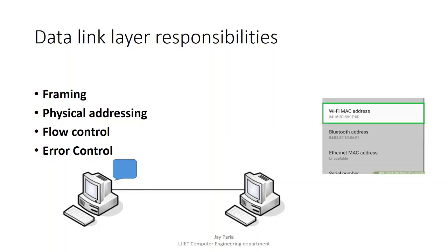Error control addresses the possibility that data received by the receiver may contain errors. If the link is broken or data is not received properly, there are many cases that can happen, and we need to know how to overcome errors in data. So error control is also a responsibility of the data link layer.